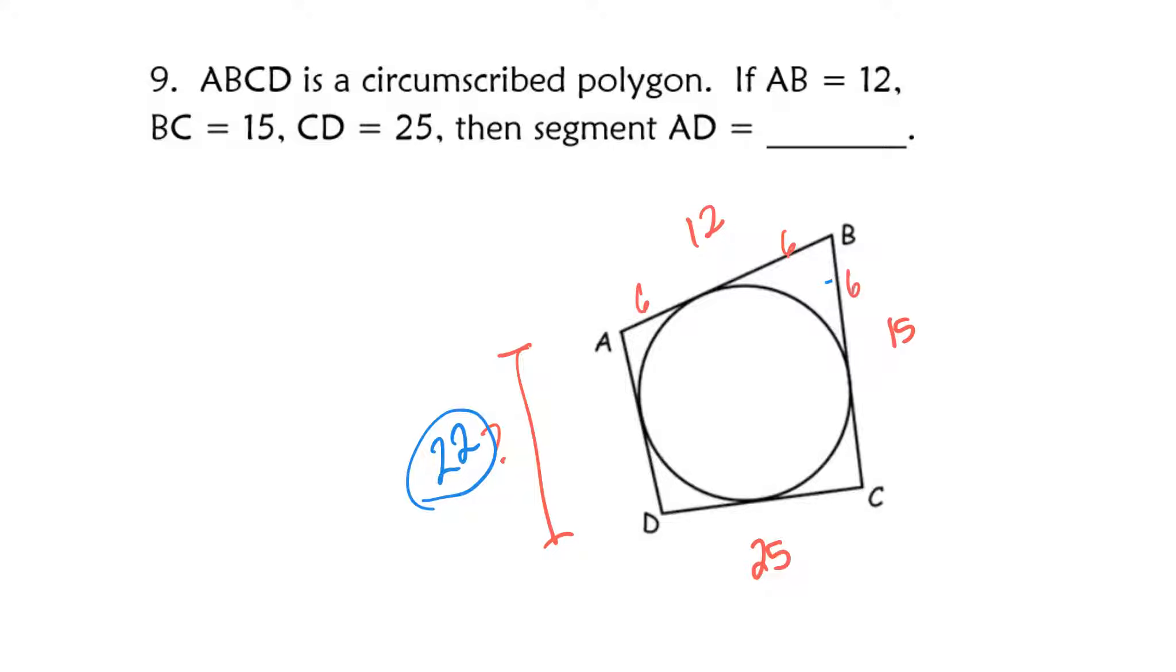All right, so my tangent segments I followed around, the whole side is 15, the other part has to be 9, this has to be 9, so then this section would be 16. So for AD, I have 6 and 16, which is 22.